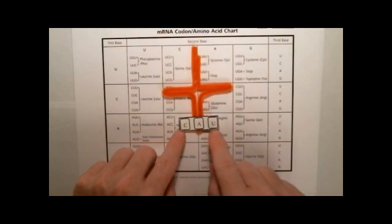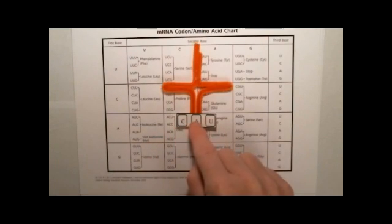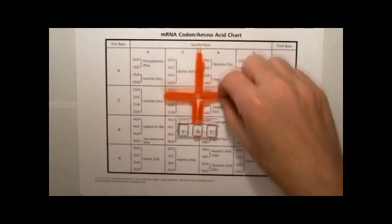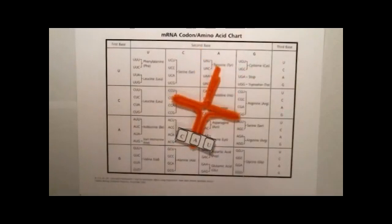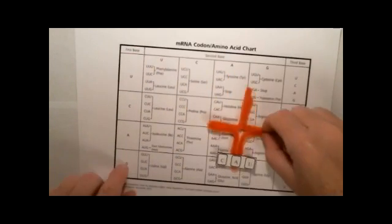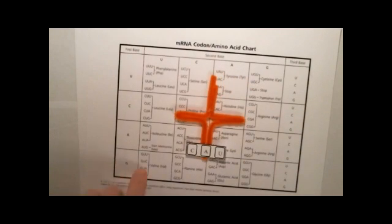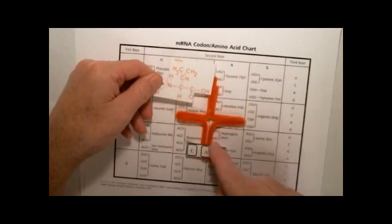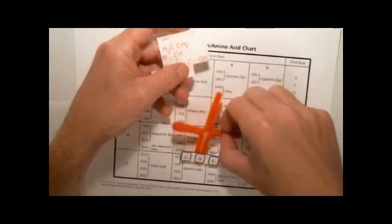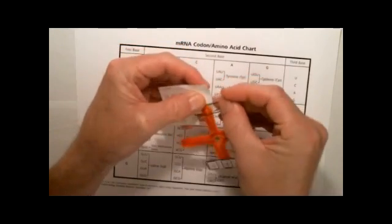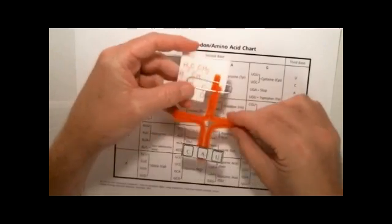Our next one here is C-A-U. Again, this is the anticodon that would go on one of the codons on mRNA, but to figure out, to get this charge, to figure out what amino acid goes here, we need to find the G-U-A piece. So here we got G-U-A. This is valine. G-U-A. Here's our valine molecule. Again, our variable R group, our carboxylic acid and amine group. The tRNA gets attached to the carboxylic acid side.